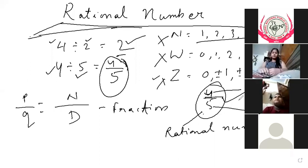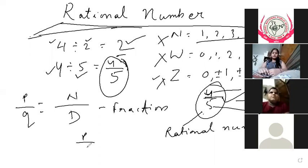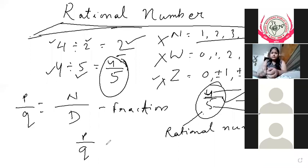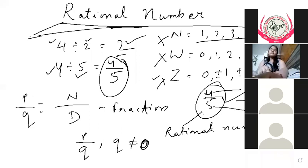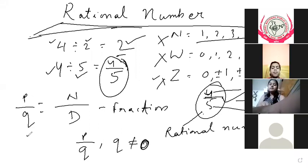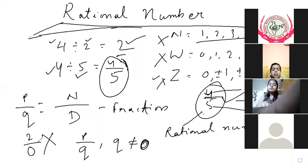A rational number is written in p by q form, where q is not equal to zero. This means the denominator is not zero — the lower one is not zero.